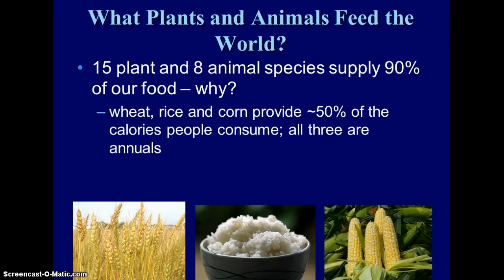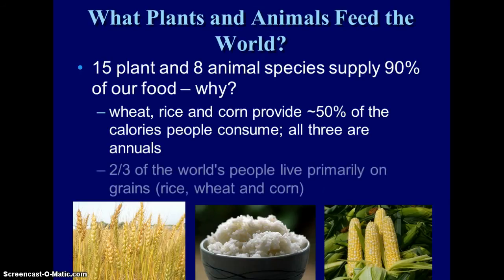Whenever we remove vegetation, we're exposing that soil and making it more susceptible to erosion. Two thirds of the world's people live primarily on these three grains — wheat, rice, and corn — which actually can lead to malnutrition. Remember that malnutrition is when you're not getting the right nutrients; you may be getting enough calories but not the right calories.